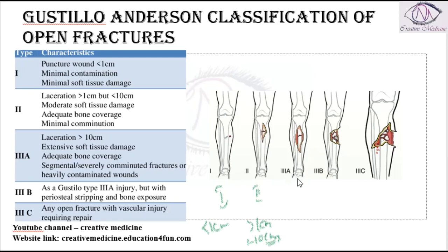And finally, in grade 3, these are actually severe wounds. In grade 3a, there is more than 10 cm wound with excessive soft tissue damage, but bone is covered by the periosteum. There is adequate periosteal coverage though there is extensive soft tissue damage. Segmental and severely comminuted fractures will come under grade 3a.